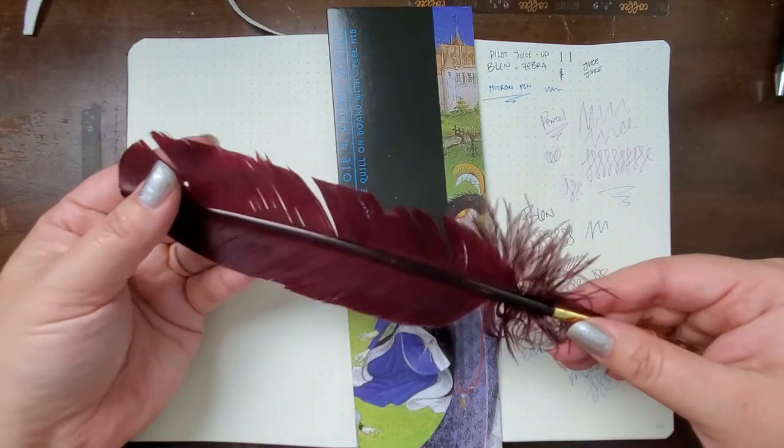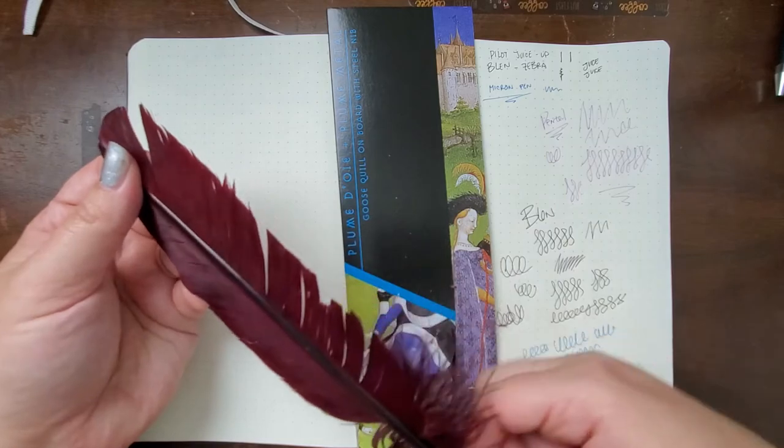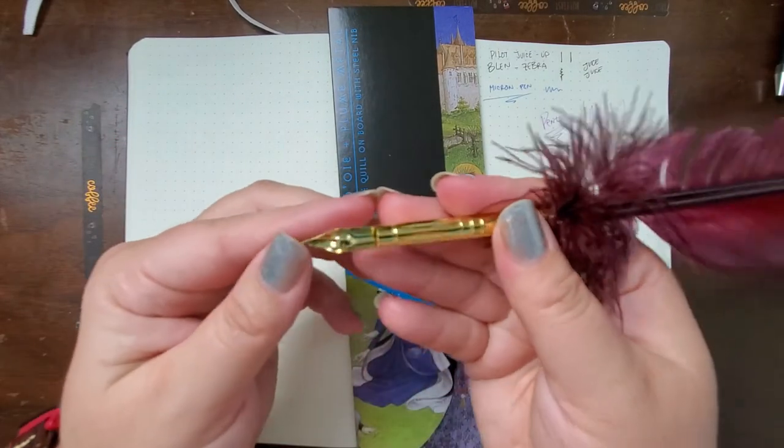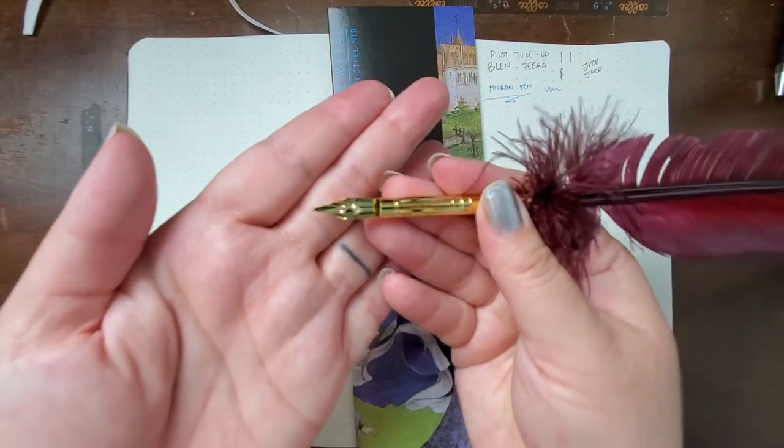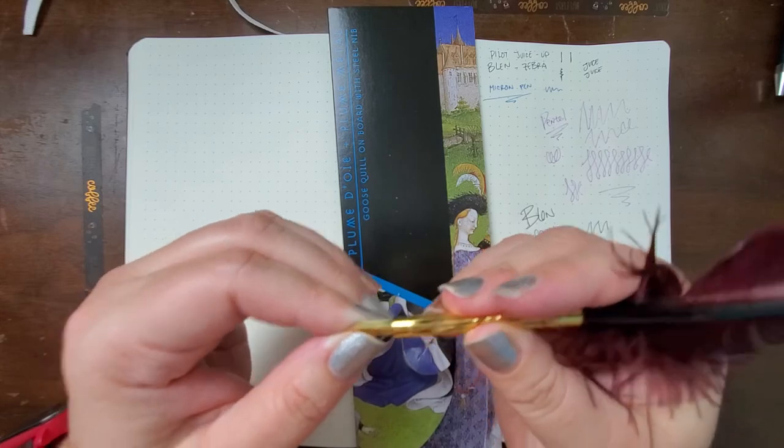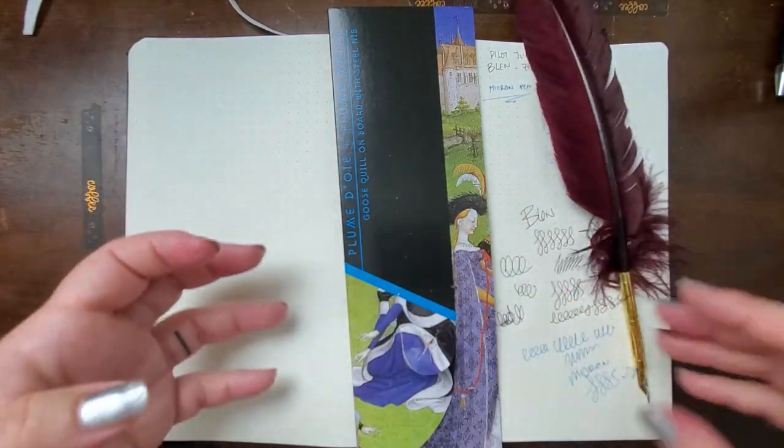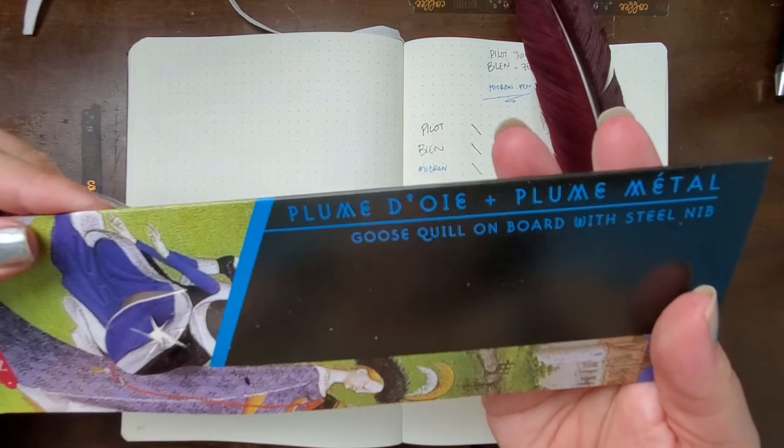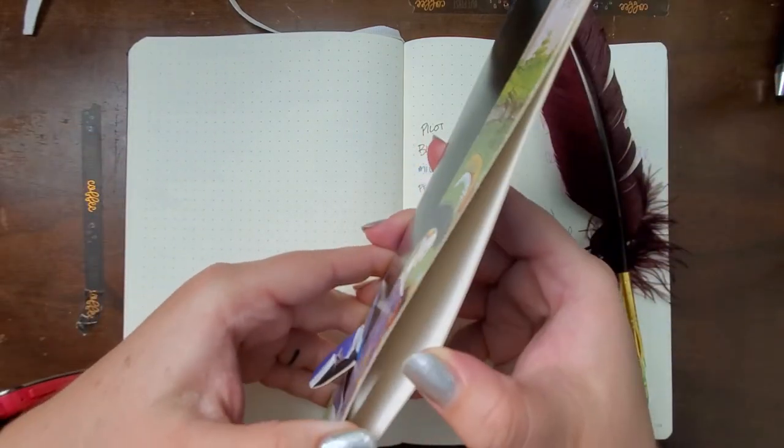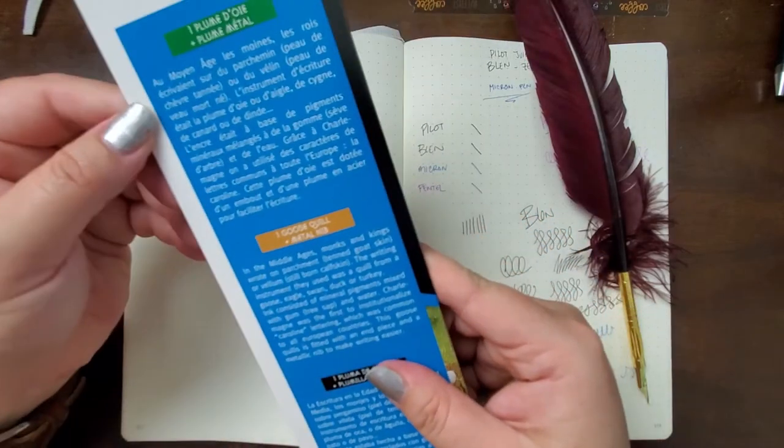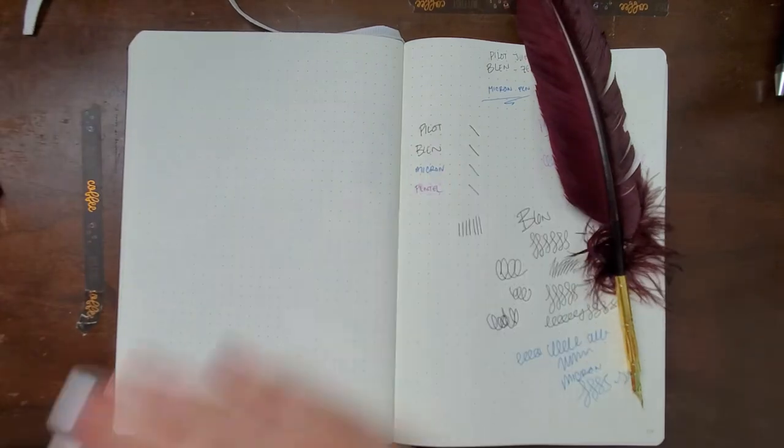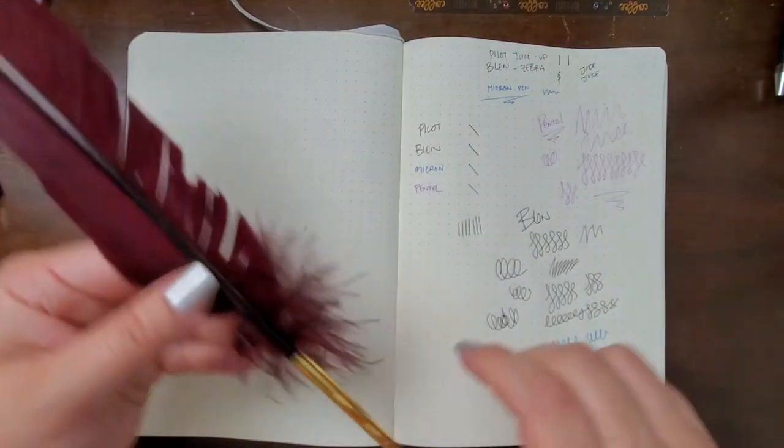It's just a nib, I guess, shoved into this nib holder here. That's pretty cool. I wonder if I could like take it out. I don't know, but it says goose quill on board with steel nib. And then there's nothing in between that. And it's just really telling a story about writing with parchment made in France. I'm getting goose bits everywhere.